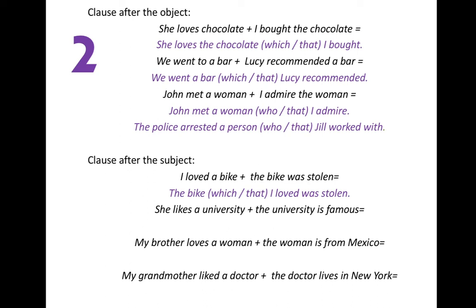Now let's go with sentences where the relative clause comes after the subject. 'I loved a bike' and 'The bike was stolen.' Connecting them: 'The bike which — or that — I loved was stolen.' The relative pronoun is 'which' or 'that,' and the relative clause is 'which I loved' or 'that I loved.' The relative clause is referring to the subject of the first clause: the bike which I loved was stolen.